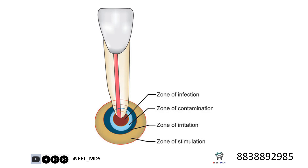This is important from an MCQ perspective: zone of infection — neutrophils; zone of contamination — lymphocytes; zone of irritation — macrophages and osteoclasts; zone of stimulation — fibroblasts and osteoblasts.